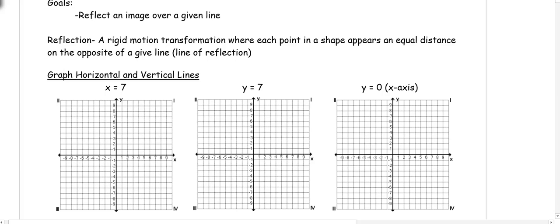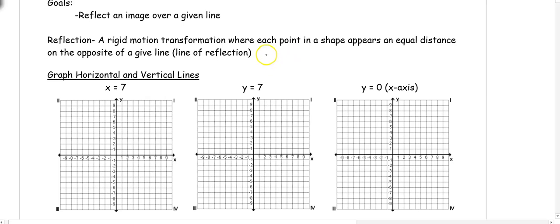This video is about reflecting an image over a line. A reflection is a rigid motion transformation where each point in a shape appears equidistant on the opposite side of a given line. This line is called the line of reflection. It's also thought about as flipping your figure over a line.